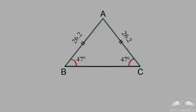We have seen that in a triangle, if two sides are equal then two angles also become equal. Here two sides are equal — 26.2 and 26.2 — so two angles are also equal: 47 degrees and 47 degrees. Equal sides contain equal angles, and equal angles will also contain equal sides.